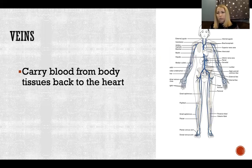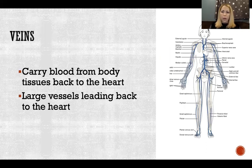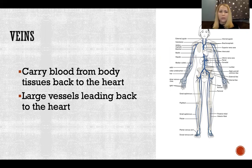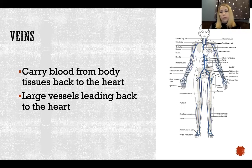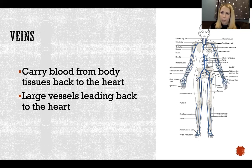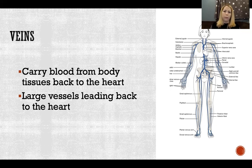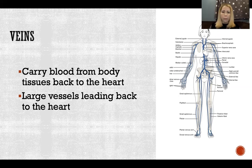Veins are the counterpart to arteries — the larger vessels carrying blood back after exchange has taken place in the capillaries. Arteries go away from the heart; veins come back to the heart. In systemic circulation, veins carry deoxygenated blood from the body back to the heart where it will become oxygenated again. In pulmonary circulation, veins carry oxygenated blood returning from the lungs back to the heart, so it can be pumped out through arteries in systemic circulation. So: arteries away, veins coming back, regardless of whether the blood is oxygenated or deoxygenated.